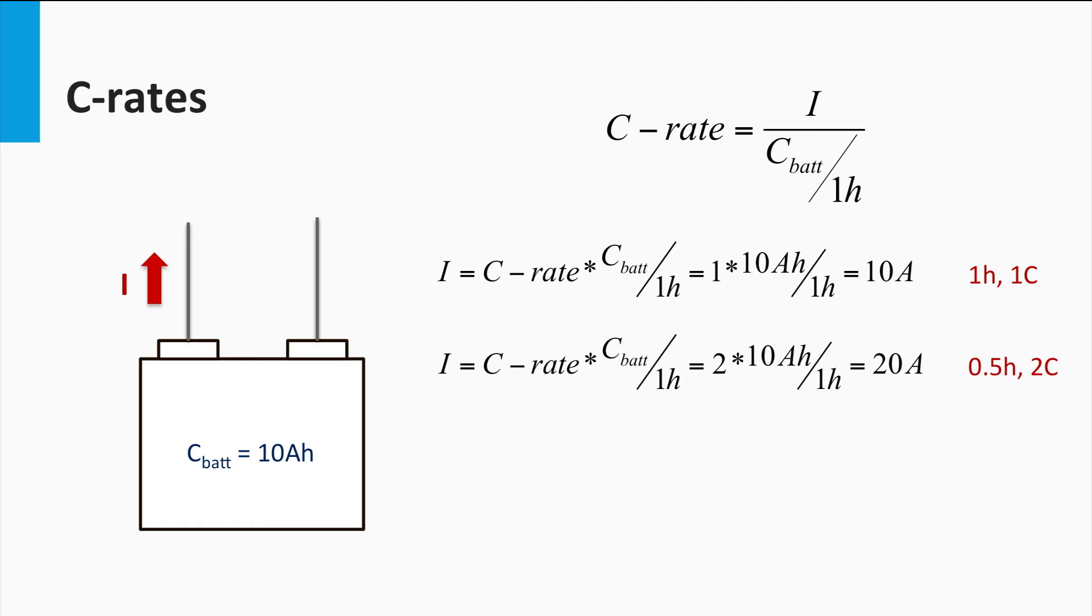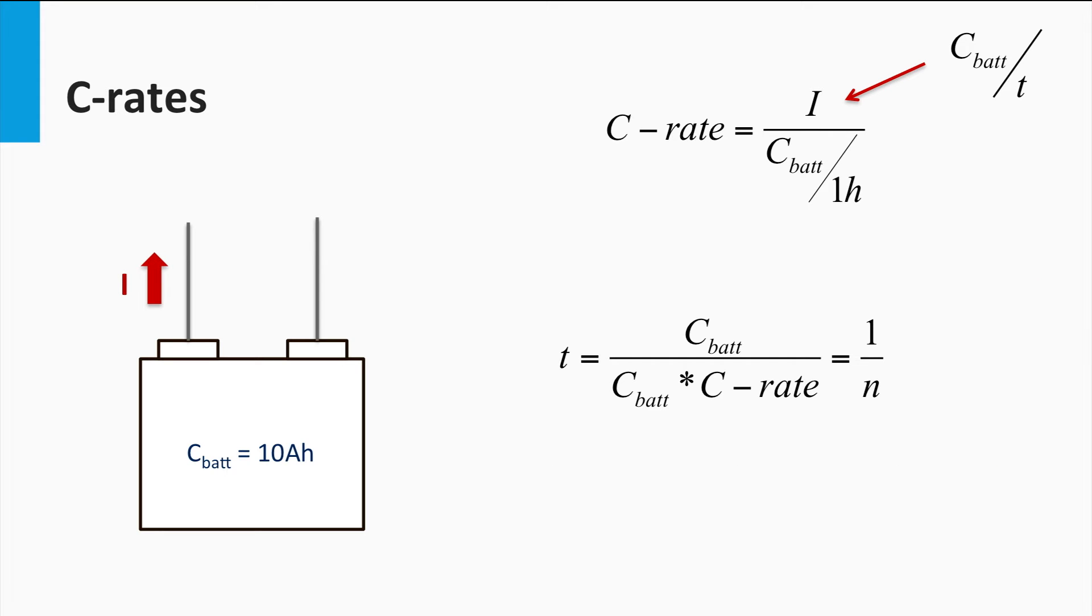On the other hand, a C-rate of 2C for the same battery would correspond to a discharge current of 20 Ah over half an hour. Similarly, a C-rate of 0.5 Ah implies that a discharge current of 5 Ah over 2 hours. In general, it can be said that a C-rate of Nc corresponds to the battery getting fully discharged in 1 over N of an hour, irrespective of the battery capacity.